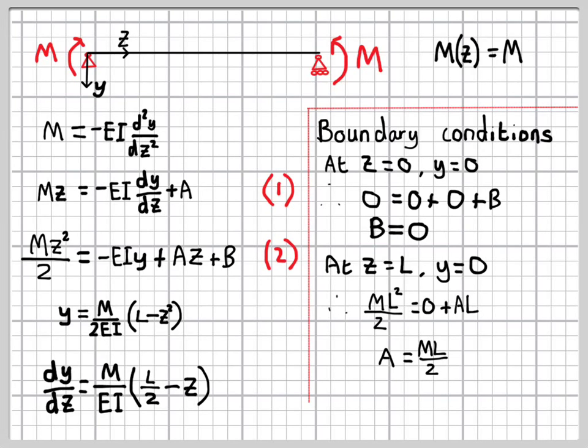So this is the basic approach that we use to find deflections of beams using the moment curvature relationship. Things can get a little more complicated if we have a more complicated bending moment distribution, and sometimes the boundary conditions aren't quite as obvious, but the general principles will apply whatever the problem.